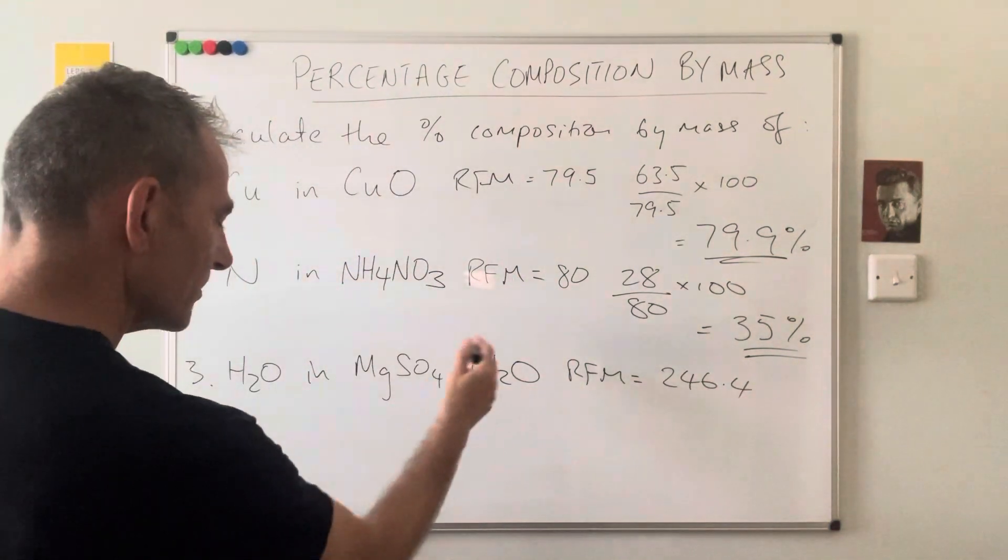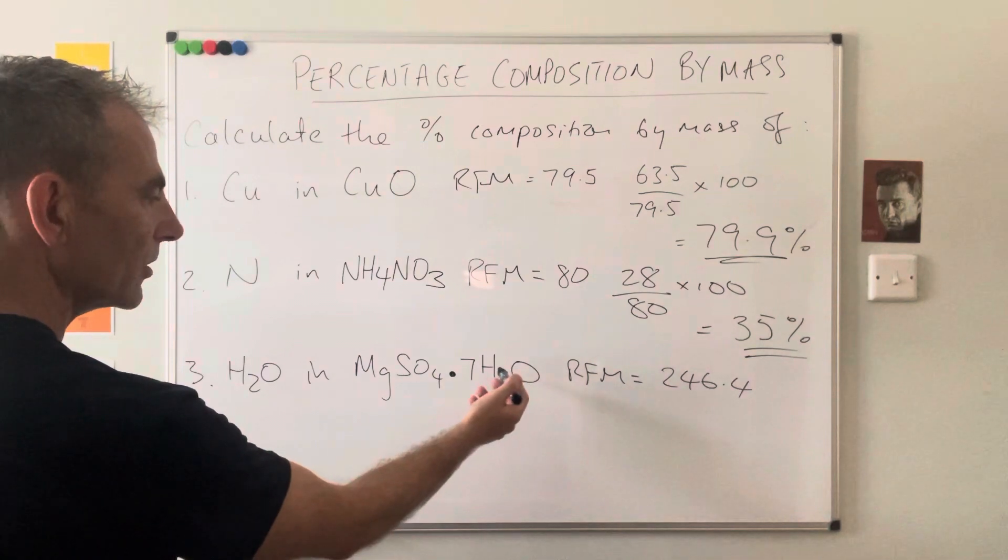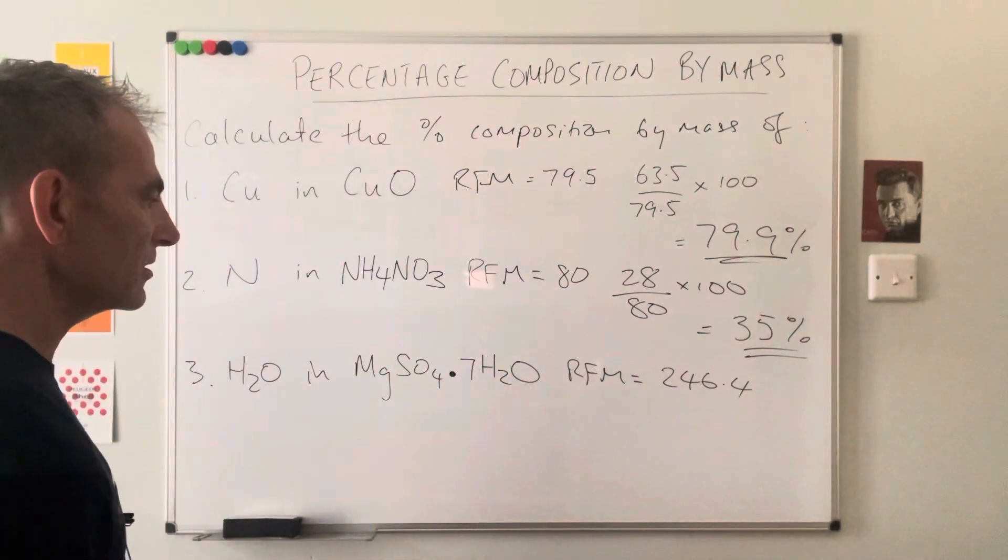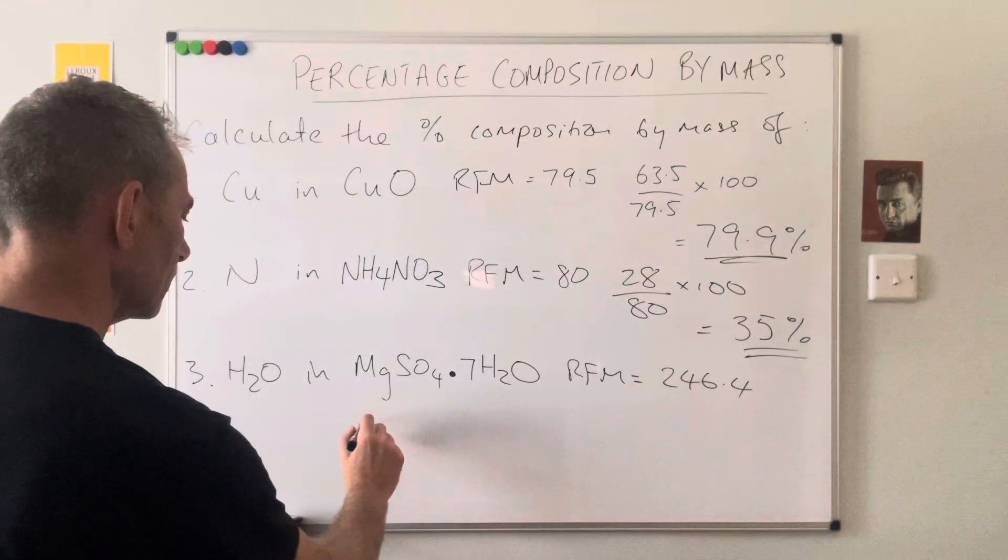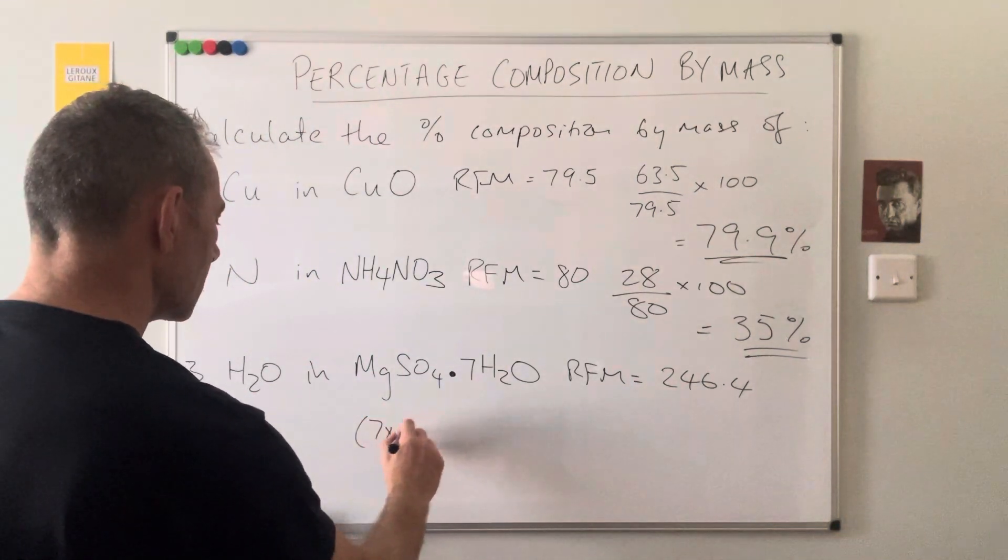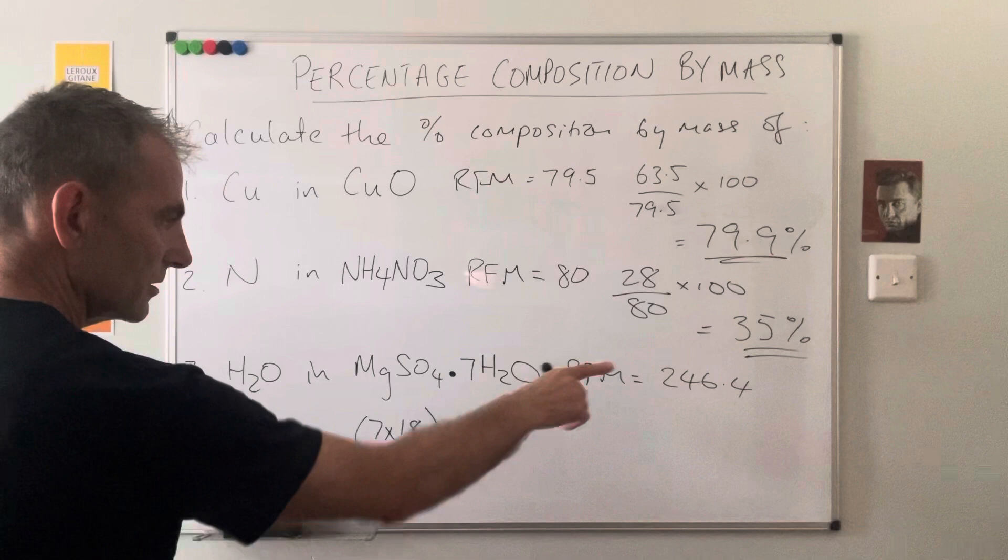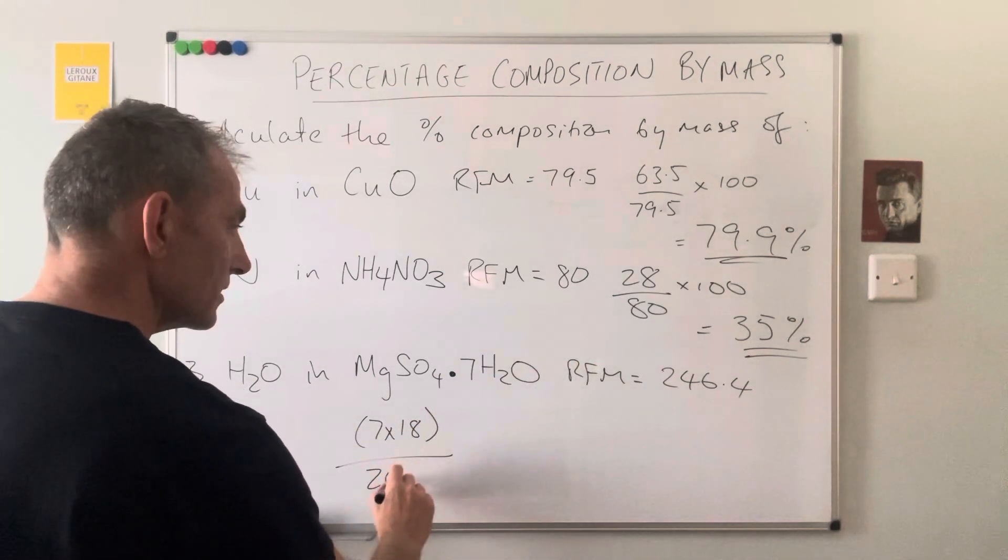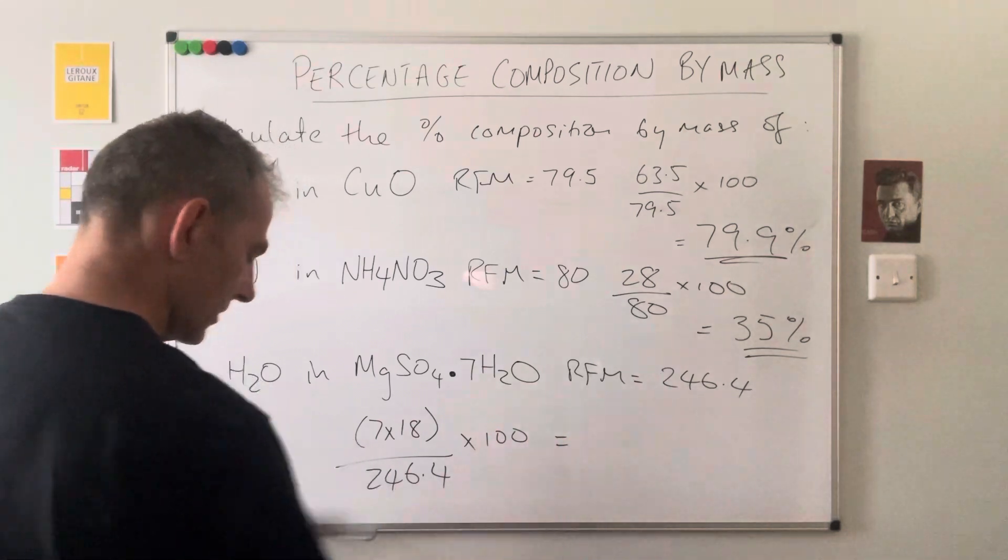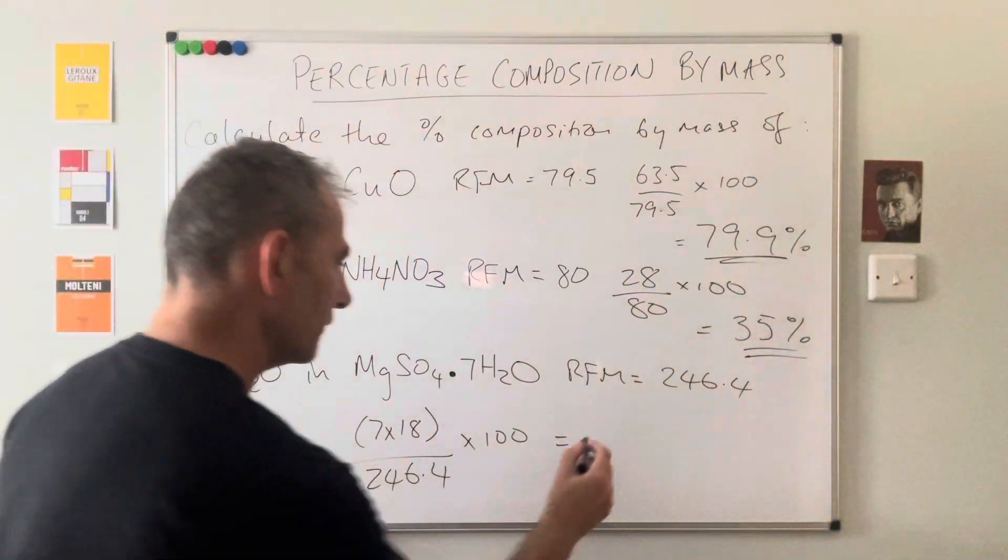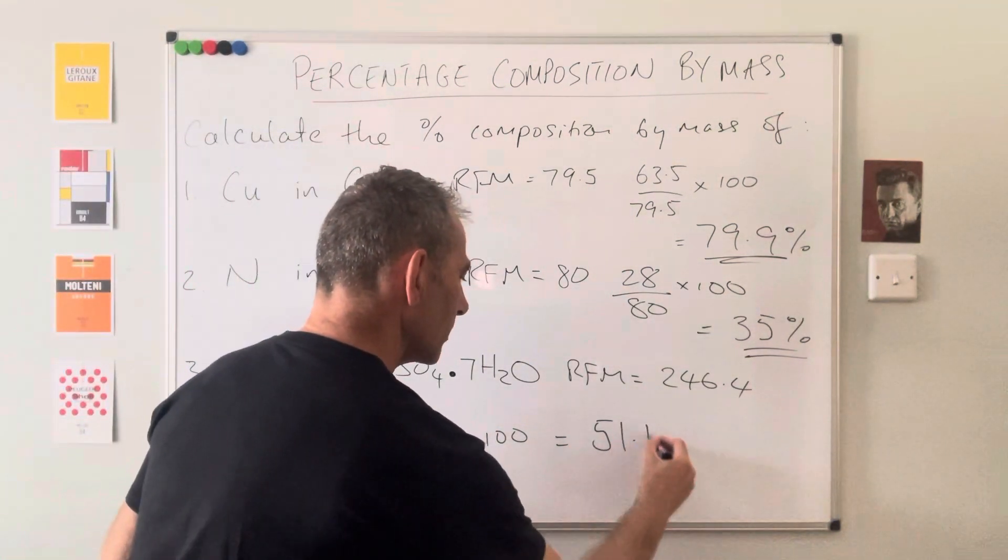So what's the percentage composition by mass of H2O in that? Well, there's seven H2O's that make up that total mass, so we're going to put seven times 18 on the top, divide by the total, 246.4, multiply by 100, and the answer comes out at 51.1%.